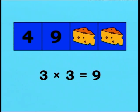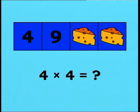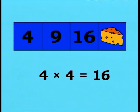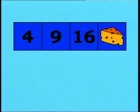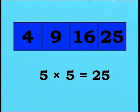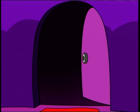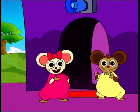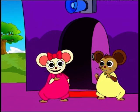Very good! And the third sum: how many is four multiplied by four? Hmm, four multiplied by four is equal to sixteen. Fantastic! Here's your final sum: five multiplied by five. That's easy — five multiplied by five is equal to twenty-five. Amazing! You may enter. Welcome home. Yahoo, yee-hi, yabba-dabba-doo! Goodbye, friends! Hope you'll have as much fun with multiplication as we had!